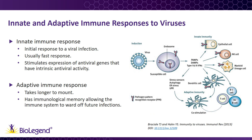The adaptive immune response takes longer to react, but will have memory of the virus once it has been exposed. Adaptive immunity can therefore protect the body from future infections in a quicker manner. This video will focus on how a virus triggers the innate immune response and the expression of intrinsic antiviral genes after a viral infection has been detected.